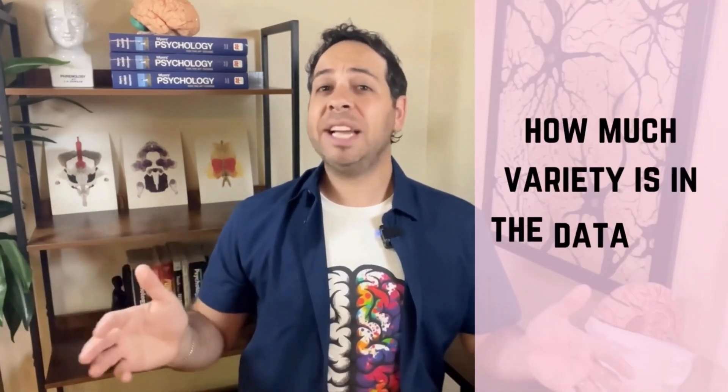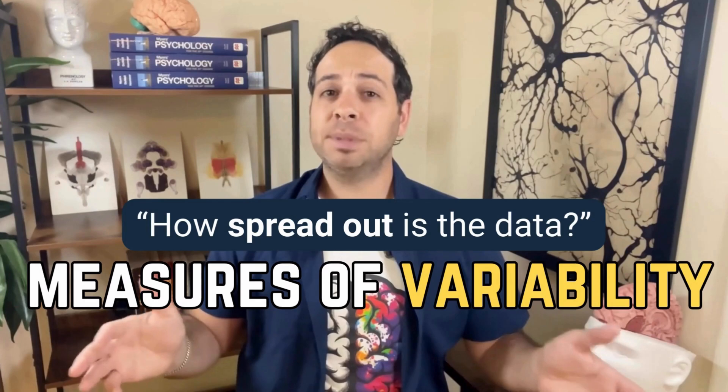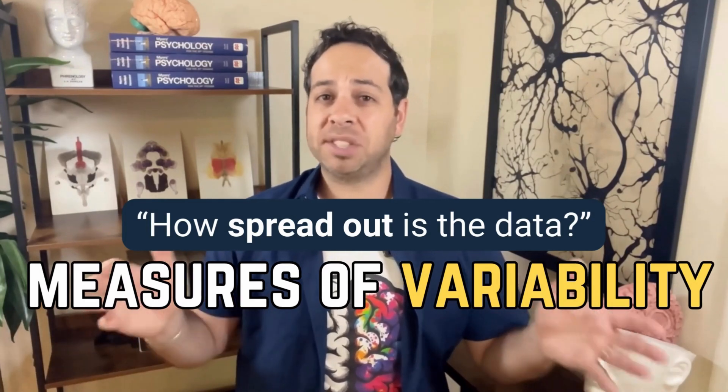Alright, so we've nailed the middle, but now it's time for the next big question. How much variety is in the data? Are the scores all clumped together in a cozy little bunch, or scattered like someone dropped a bag of Skittles? That's where measures of variability come in, or in AP terms, how consistent or scattered the responses are. Let's break down three ways psychologists measure that spread.